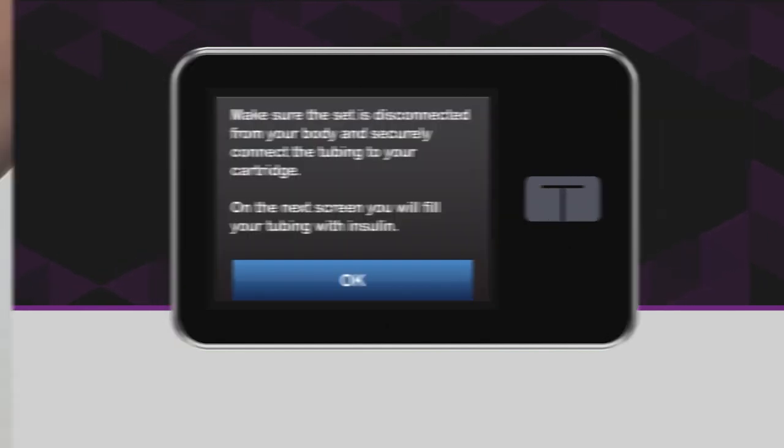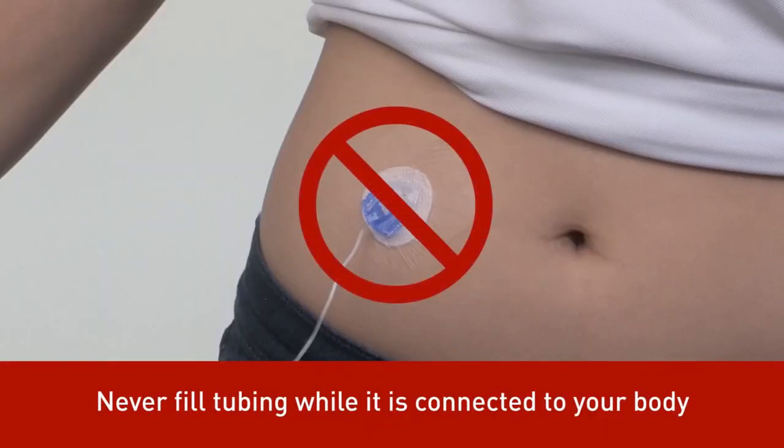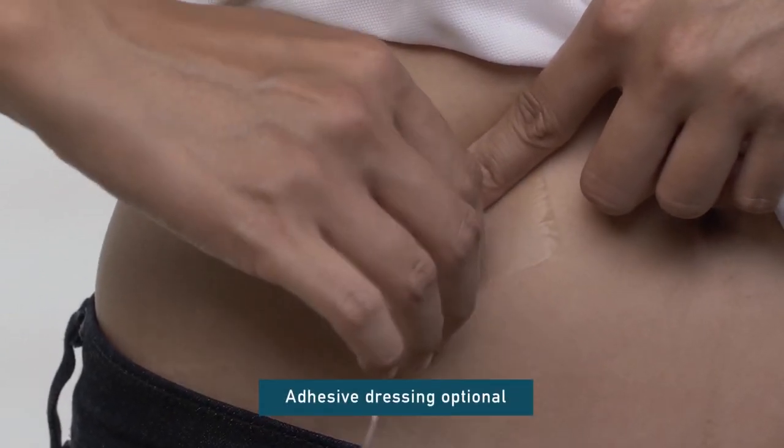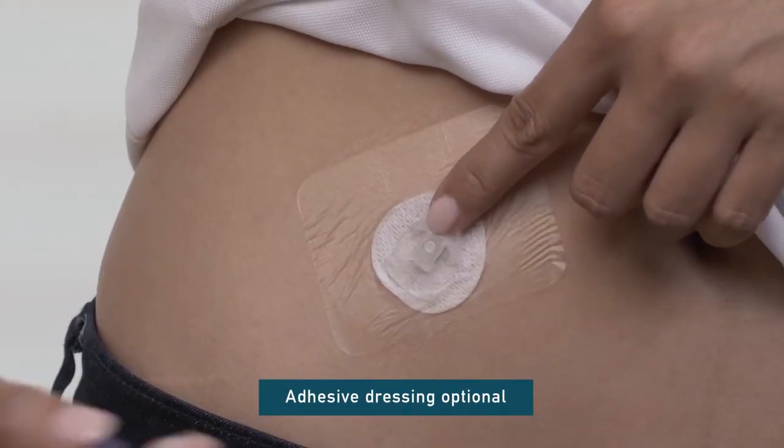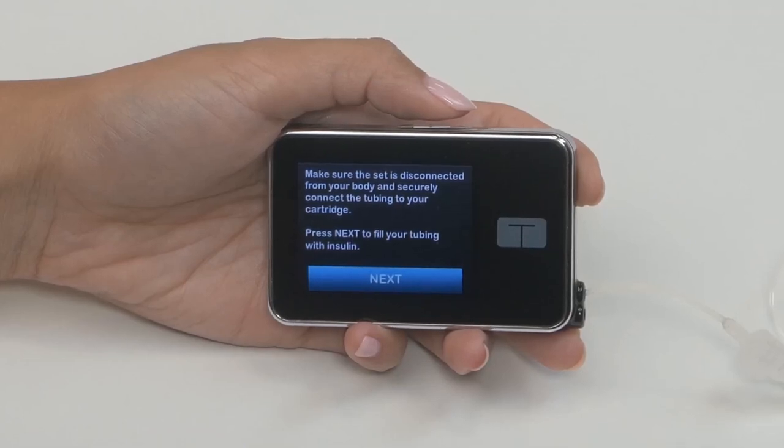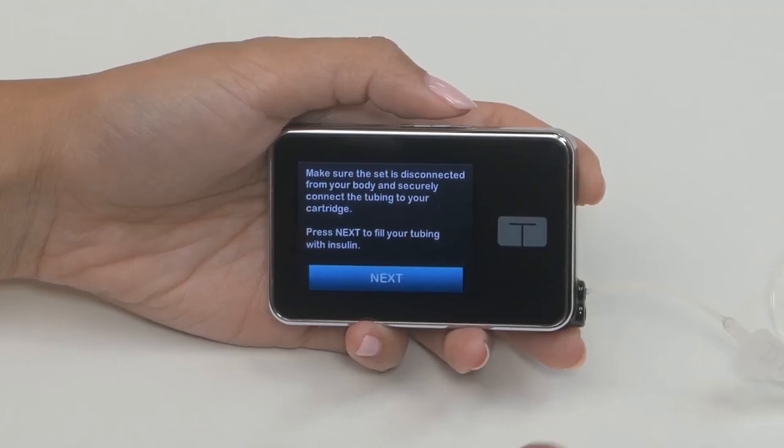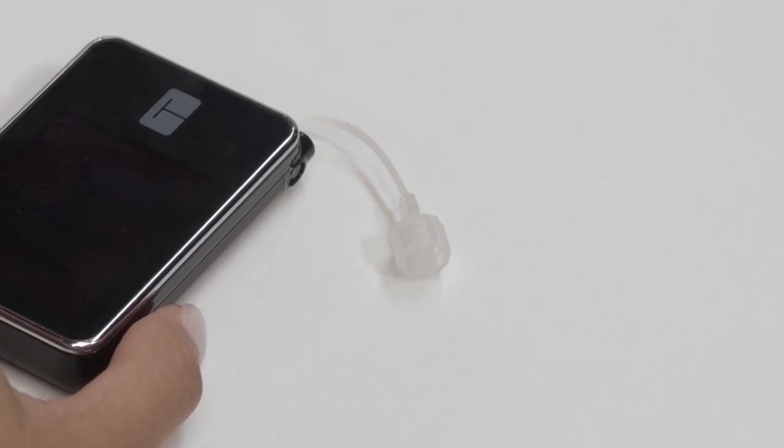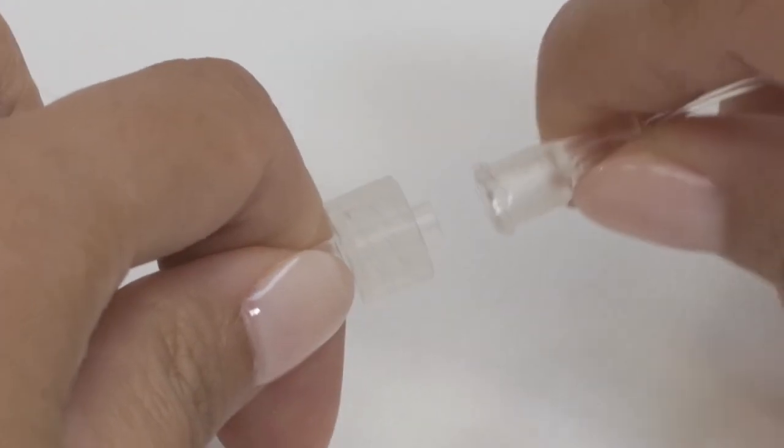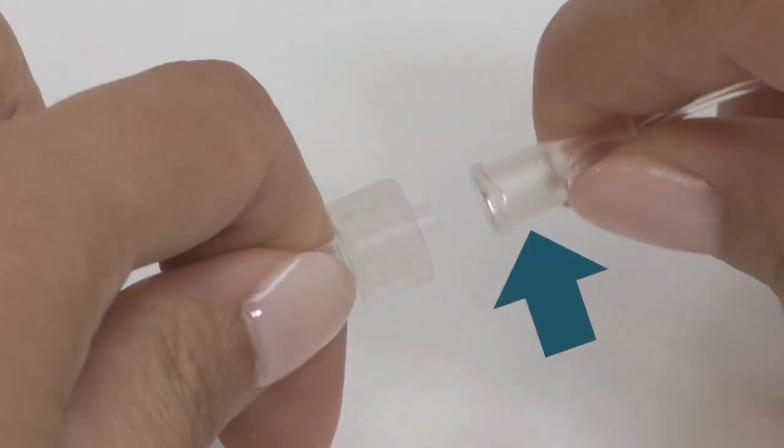Your pump will prompt you to fill your tubing with insulin. Never, ever fill your tubing when it's connected to your body. This could result in the unintended delivery of insulin. Always disconnect your infusion set from your body before you begin a load sequence. Your pump will remind you of this each time you tap Load. Before you can fill your tubing, you need to connect your tubing to the cartridge. Your infusion set may look different, but the tubing fill process is the same.